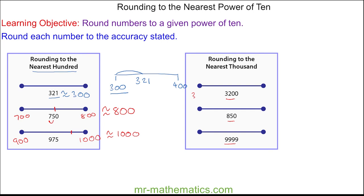So here we have 3000 and 4000. It is closer to 3000, so it is approximately 3000 to the nearest 1000.